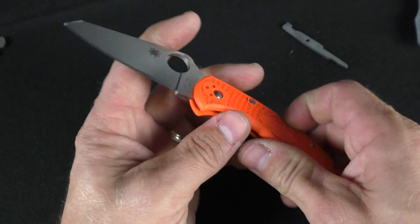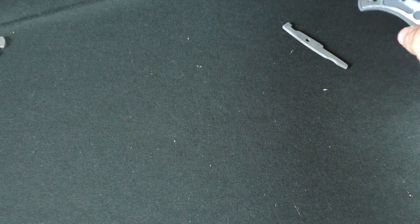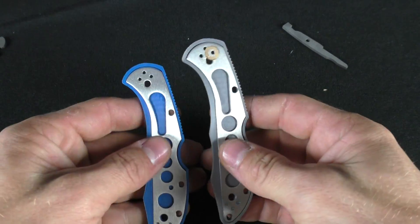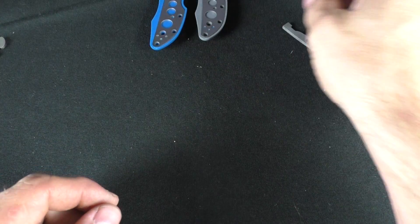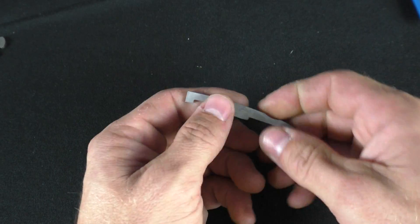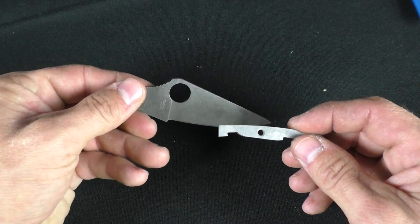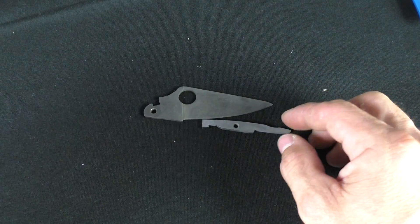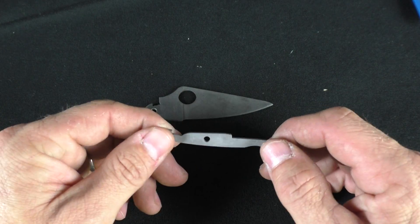Once that's all disassembled, we get all the parts, separate them out. If we're going to change out back spacers, we go ahead and get those laid out and everything like that. Then we take the blades and everything that are going to be acid washed.